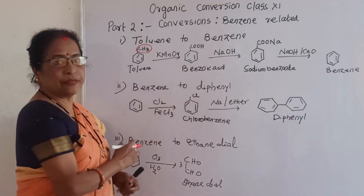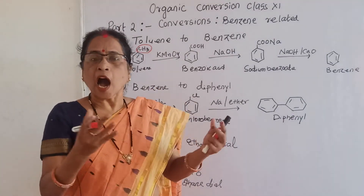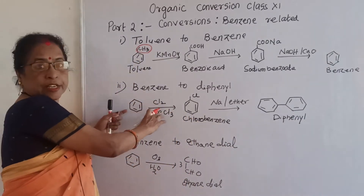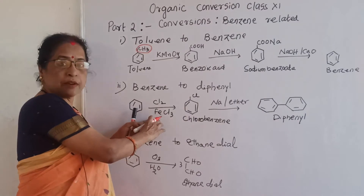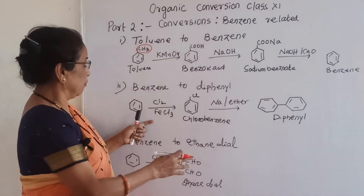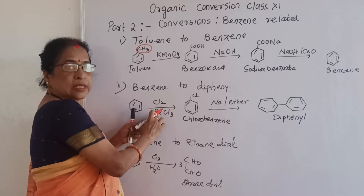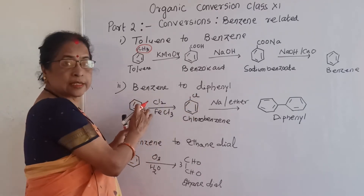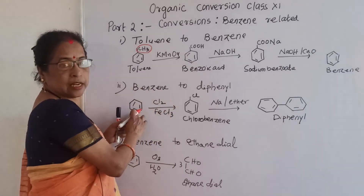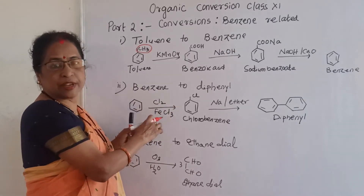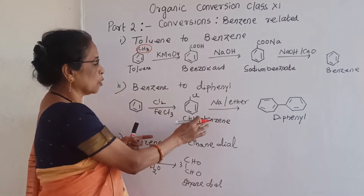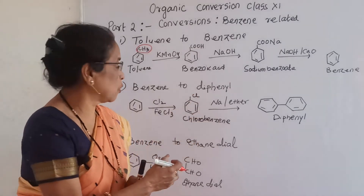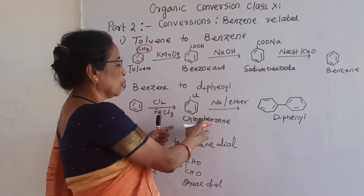Now: benzene to diphenyl. One benzene is there — how do two benzene rings join? That product is called diphenyl. Benzene when treated with chlorine in the presence of FeCl3 — don't forget to write FeCl3 — gives chlorobenzene. Benzene has 6 carbons and 6 hydrogens with double bonds. One hydrogen is replaced by chlorine, giving chlorobenzene.